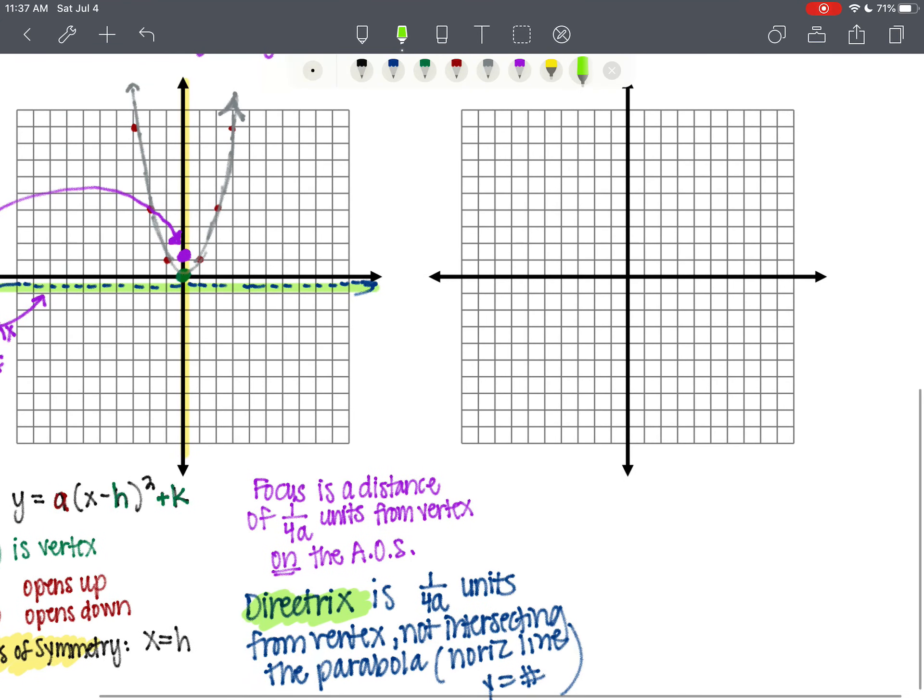Now, let me just draw a picture with a parabola that opens sideways, just so you can see where these new parts are. You've got your vertex. And this time, we've got a relation that fails the vertical line test. So it's not a function. It's a relation.